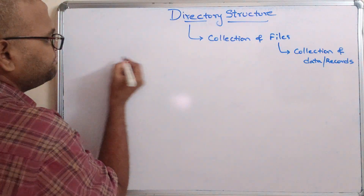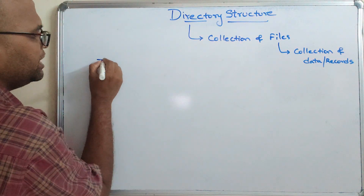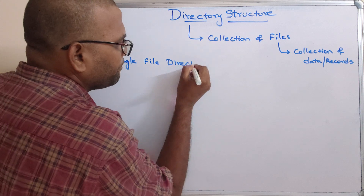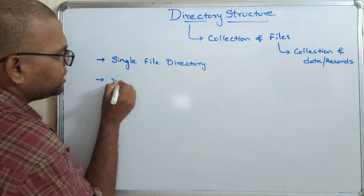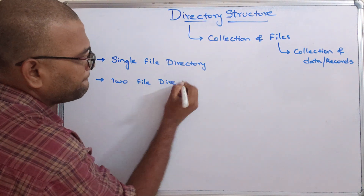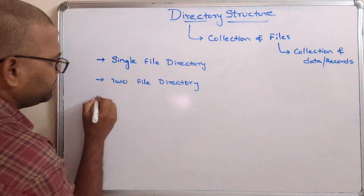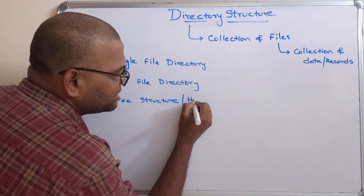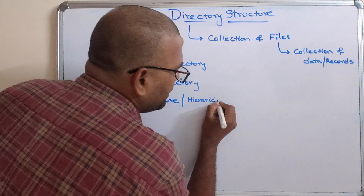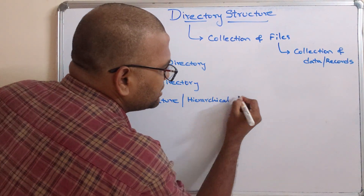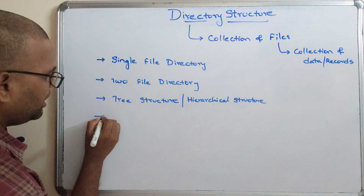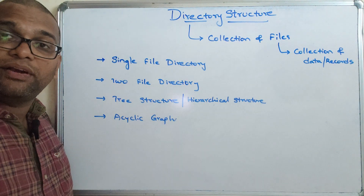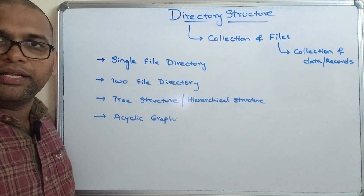A directory is a collection of files, and a file is a collection of data or records. So how many ways can these directories be structured? There are four categories mainly: the first one is single file directory, next is two-level directory, then tree structure or hierarchical structure, and finally acyclic graph. These are the different ways a directory can be structured in operating system.